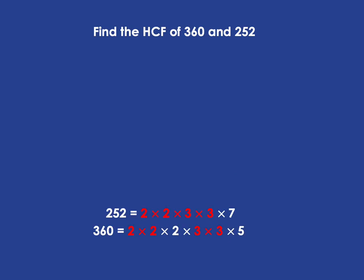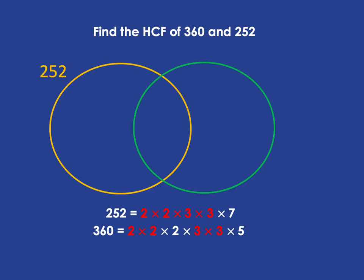Now, if we want to find the highest common factor of them, first of all, we're going to note what's in both of them. Both of them have a 2 times 2. Both of them have a 3 times 3 and then they have some other different things. So what I'm going to do is draw a picture of this. It helps me see more easily what is going on. So in the yellow circle, I'm going to put everything that is a prime factor of 252. And in the green circle, everything that's a prime factor of 360.